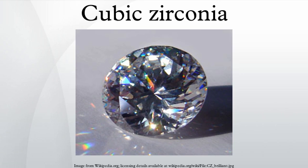Technical aspects: cubic zirconia is crystallographically isometric, an important attribute of a would-be diamond simulant. During synthesis, zirconium oxide would naturally form monoclinic crystals, its stable form under normal atmospheric conditions. A stabilizer is required for cubic crystals to form and remain stable at ordinary temperatures. This may be typically either yttrium or calcium oxide, the amount of stabilizer depending on the recipes of individual manufacturers. Therefore, the physical and optical properties of synthesized CZ vary, all values being ranges.